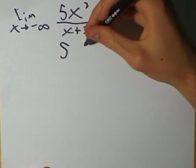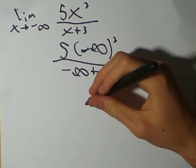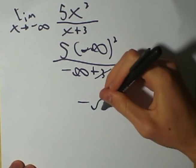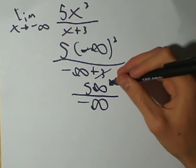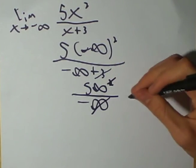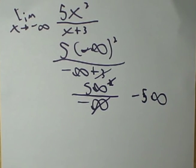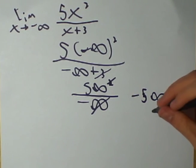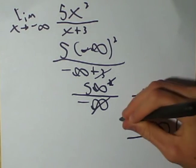First, plug in negative infinity. Now, cancel out the 3 because it is a smaller power than the negative infinity. The top one becomes 5 infinity squared. Now, you can cancel out infinity squared with infinity to produce negative 5 infinity. Now, since most math teachers don't accept that infinity can have a number in front of it, we simply make it negative infinity. And there's your answer.